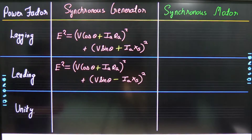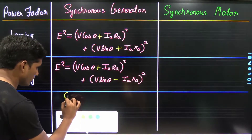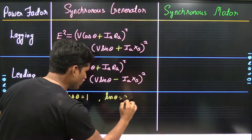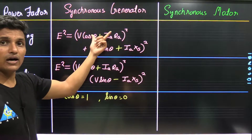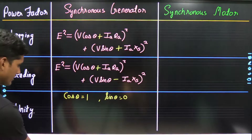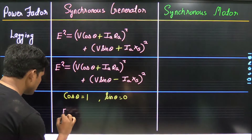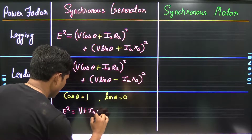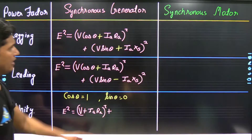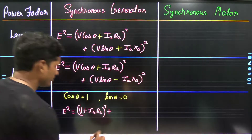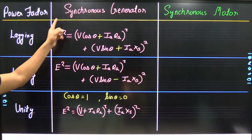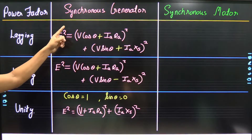At unity power factor, cos θ = 1 and sin θ = 0. Substituting these values into the lagging power factor formula, the formula becomes: E² = (V + Ia·Ra)² + (Ia·Xs)², since the sin θ term equals zero.